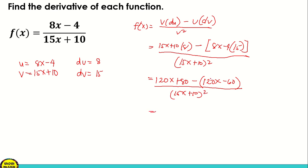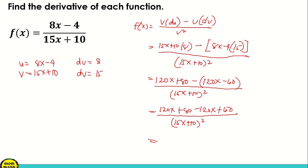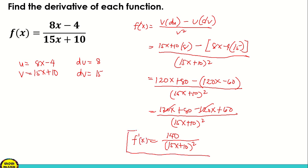Okay, so now we expand what's inside the parentheses. We have 120x plus 80. After expanding, we get negative 120x, and negative times negative gives positive 60. All over 15x plus 10 squared. So 120x and negative 120x cancel out. What remains is 80 plus 60, which is 140, all over 15x plus 10 squared. So f prime of x is equal to 140 over 15x plus 10 squared.